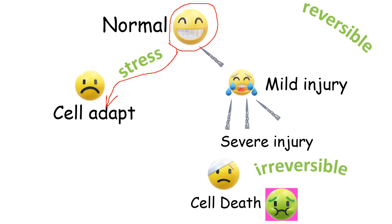In case of exercise, the muscle tries to hypertrophy — increase in size and increase its capacity to work. But sometimes the cells cannot deal with the stress. Then the cell undergoes injury. This is one way in which the cell gets injured.